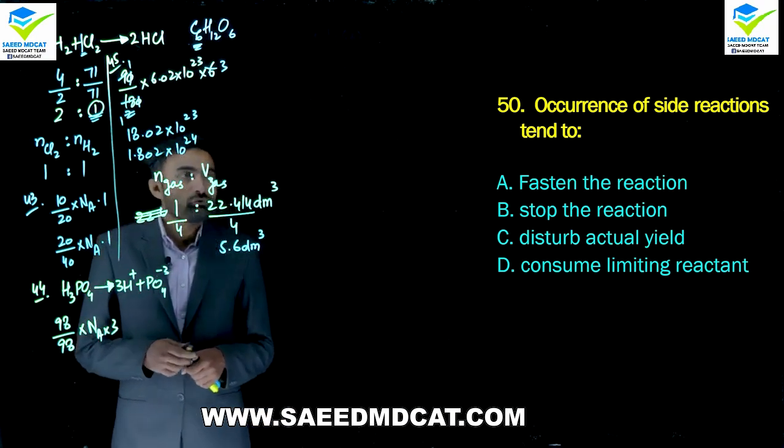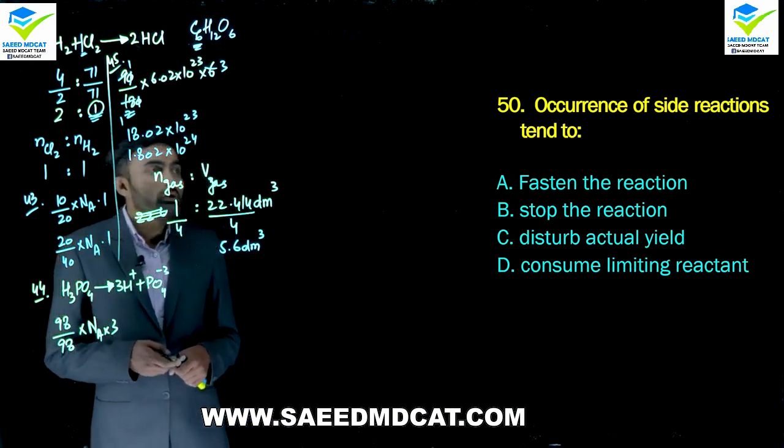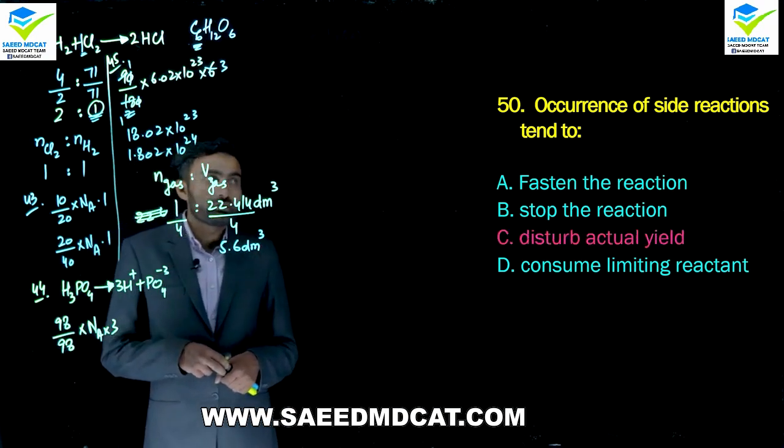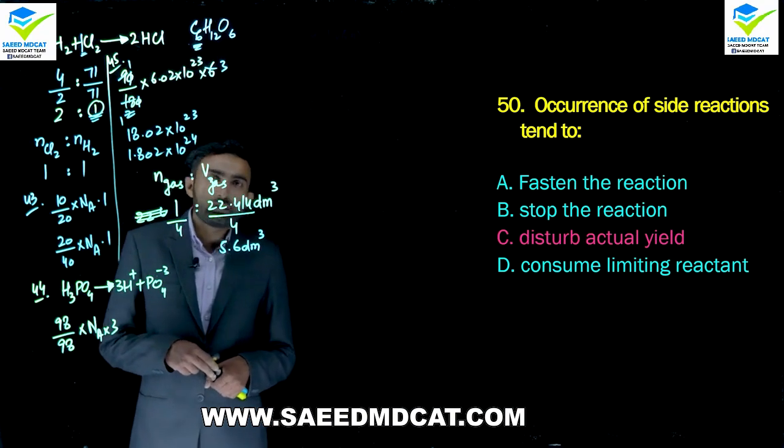Question 50: Occurrence of side reactions tends to decrease actual yield, as the reactants are diverted to form unintended products.